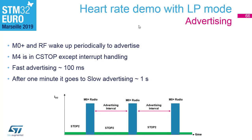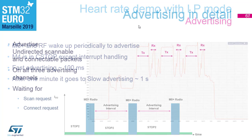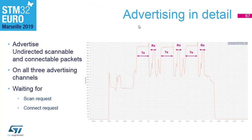This is a zoom of one radio activity peak. The advertising packet is transmitted on three different frequency channels: we always see a transmit phase — transmitting the advertising data — followed by a receive phase where the radio waits for a connect response. This happens three times on three different frequency channels, the advertising channels.